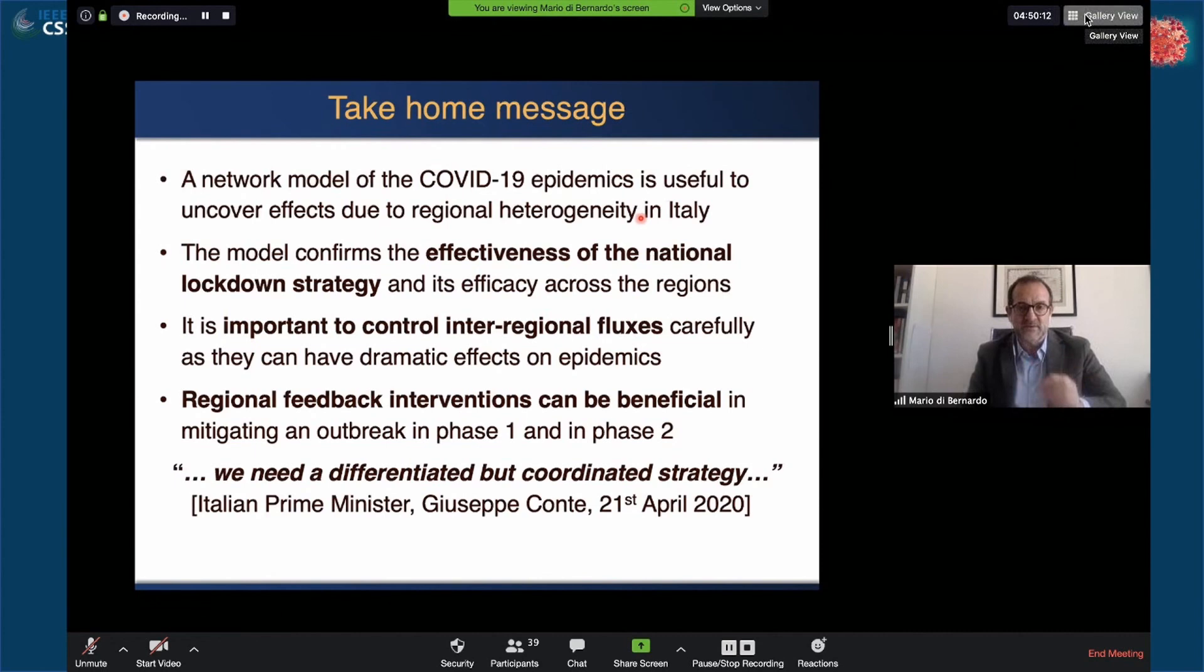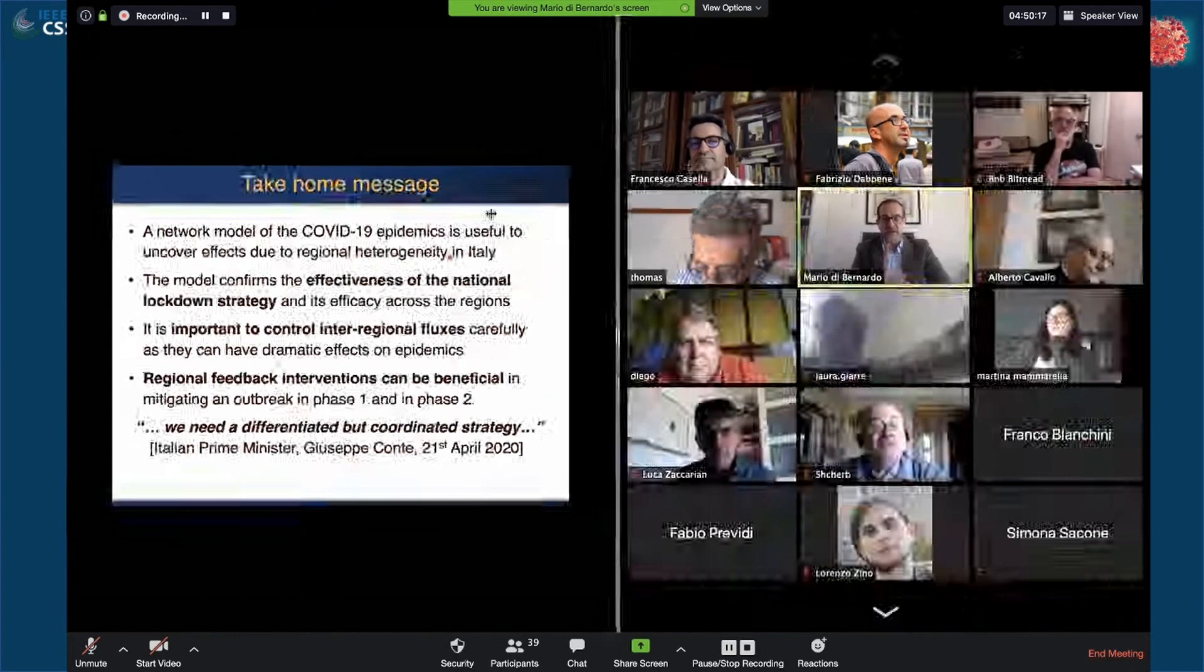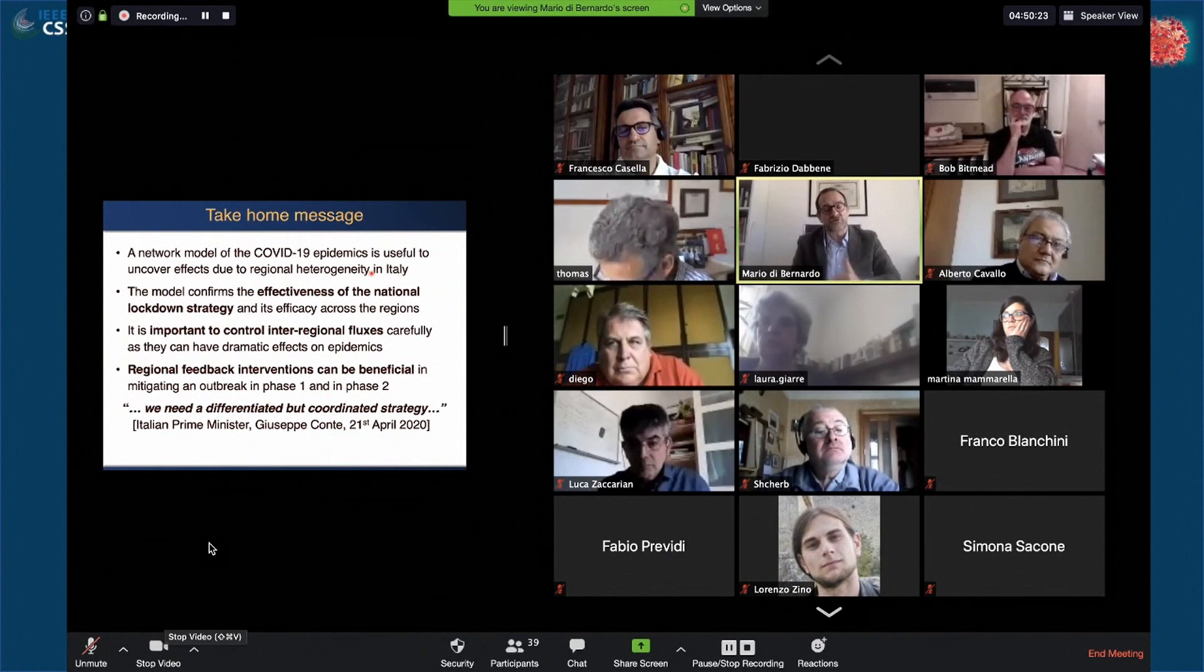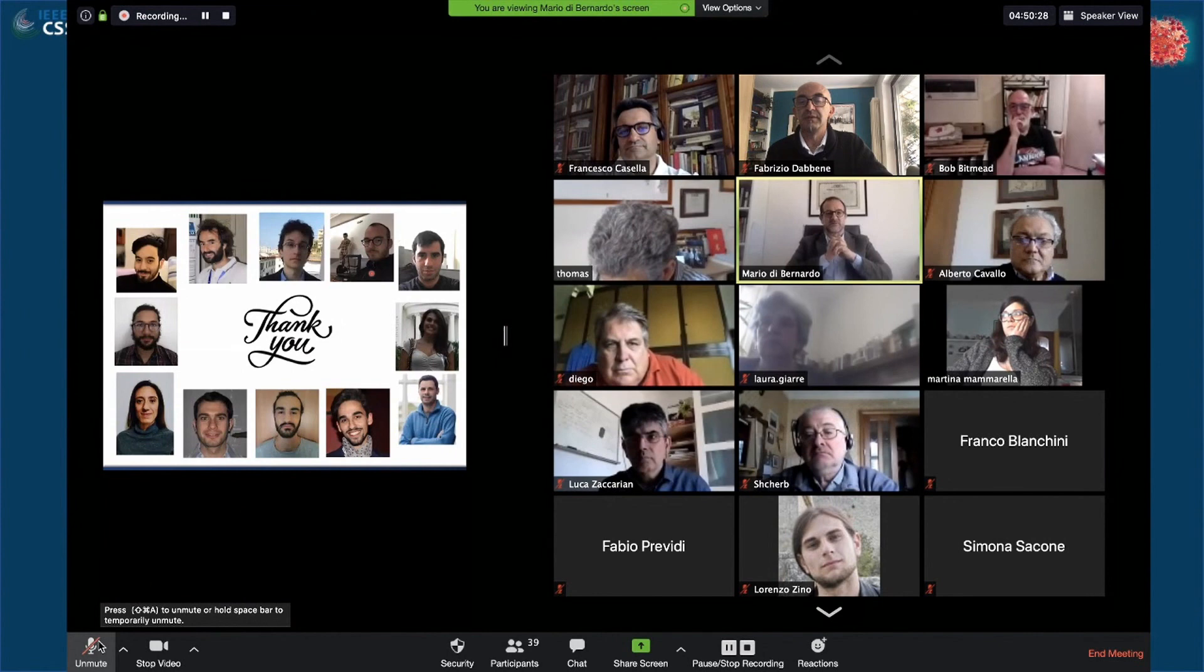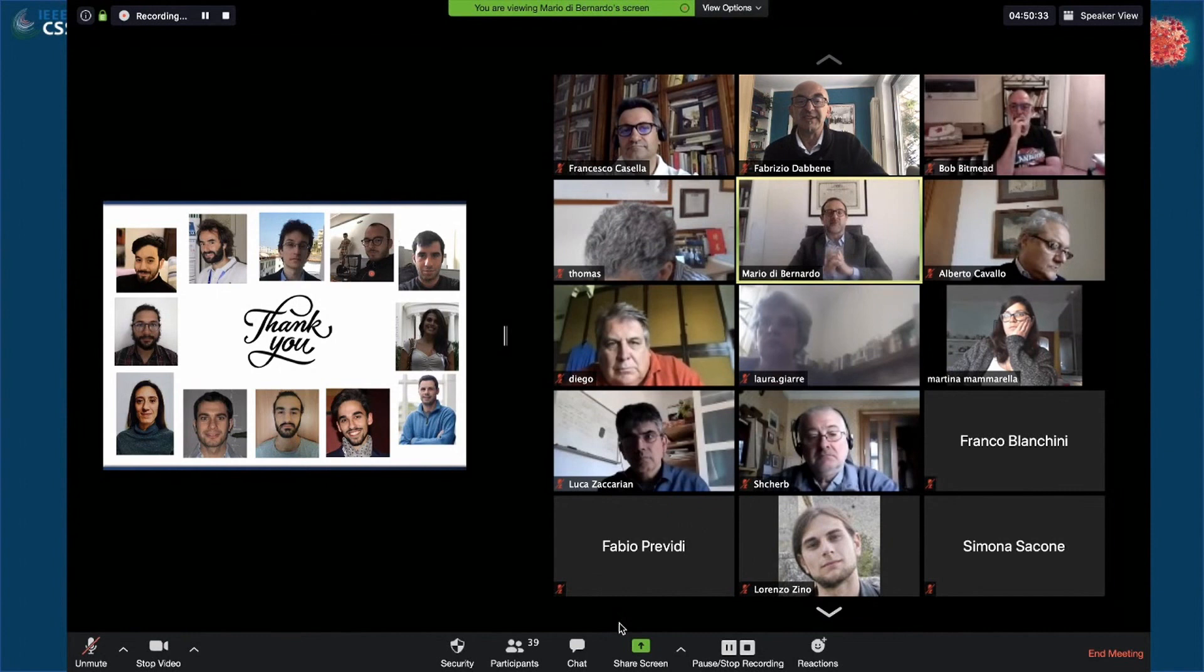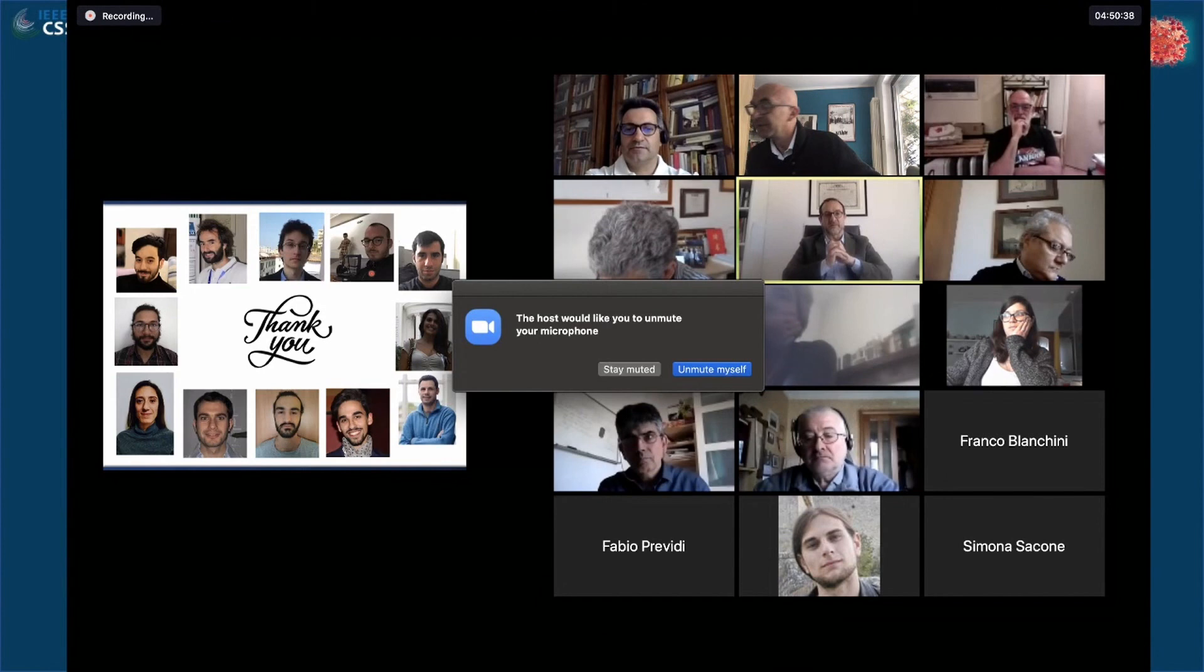I want to end with a quote from our prime minister who said that we need a differentiated, coordinated strategy. When I first read this in the newspaper, I didn't realize what he was saying. It sounded like a paradox. But now, after looking at the model and its predictions, I finally understand what it means. We need a differentiated policy in each region that needs to be coordinated at the flux level, because otherwise the economic impact might be really huge. Of course, there is a lot of work to be done, so take this with a pinch of salt. These are preliminary investigations done over the past three and a half weeks. Huge thanks goes to all my students and collaborators. Thank you.